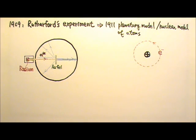He said that because most of the alpha particles went through the foil unaffected, the atom must mostly consist of empty space just like our solar system.